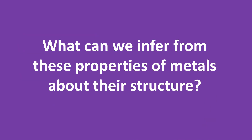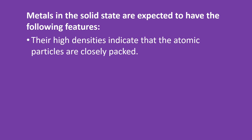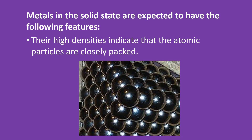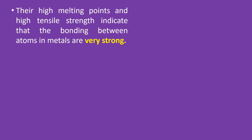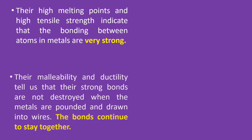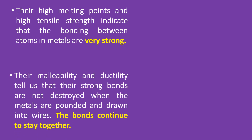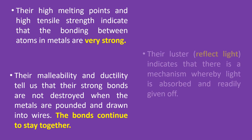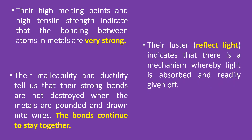So what can we infer from these properties of metals about their structure? Metals in the solid state are expected to have the following features. First, their high densities indicate that the atomic particles are closely packed to one another. Second, their high melting points and high tensile strength indicate that the bonding between atoms in metals are very strong. Third, their malleability and ductility tell us that their strong bonds are not destroyed when the metals are pounded and drawn into wires — thus, the bonds continue to stay together. And lastly, their luster indicates that there is a mechanism whereby light is absorbed and readily given off.